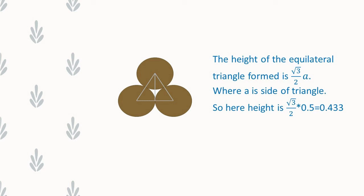Let us calculate the height of the equilateral triangle. The formula for the height is root 3 by 2 times a. By solving, we get the height as 0.433 approximately.